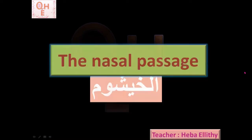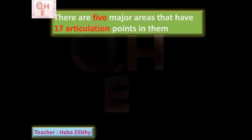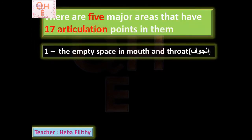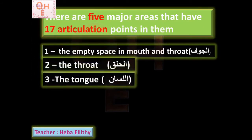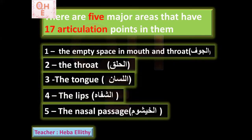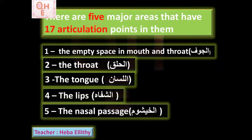Today inshallah we'll talk about al-Khayshum, the nasal passage. We said we have five major areas that have 17 articulation points total. These major areas are: the empty space in mouth and throat, which is al-Jawuf; and the throat, al-Halq; and al-Lisan, the tongue; and al-Shifa, the lips; and last one is the nasal passage, al-Khayshum.